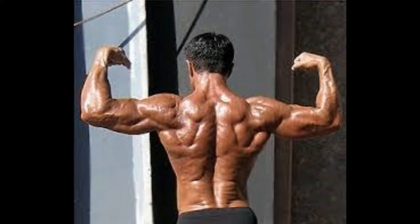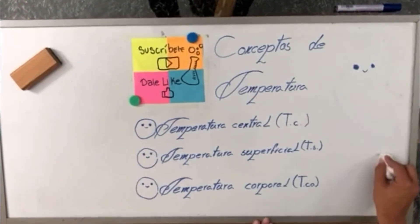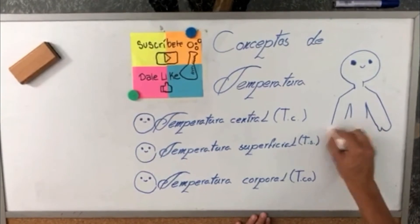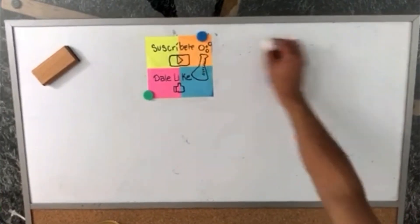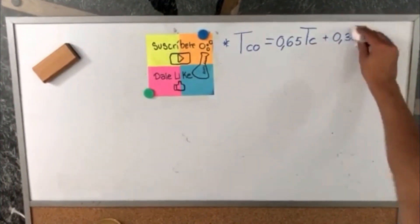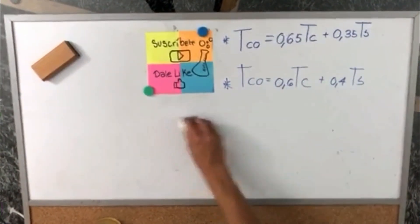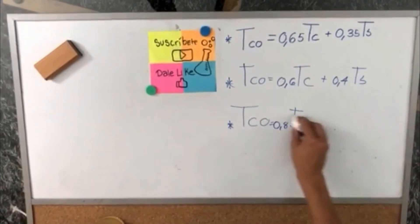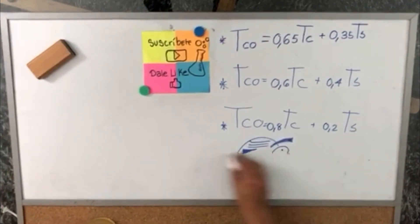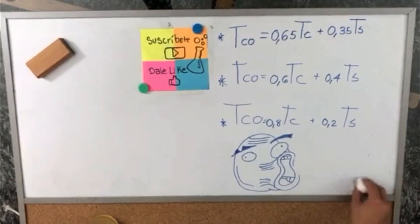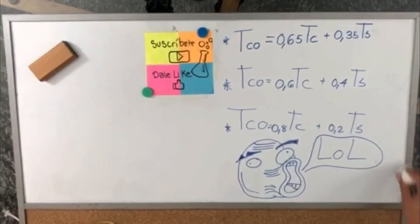Temperatura corporal (T.S.O.): es una sumatoria de la temperatura superficial y central. En un medio ambiente considerado como temperatura neutral de 28 grados Celsius, la fórmula es: T.S.O. = 0,65 T.S. + 0,35 T.C. En el caso de un medio frío, los valores serían 0,4 para T.S. y 0,6 para T.C. Y en el caso de un medio ambiente cálido, sería 0,2 para T.S. y 0,8 para T.C.